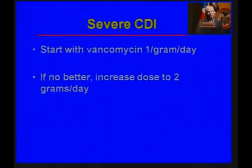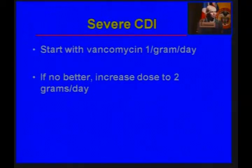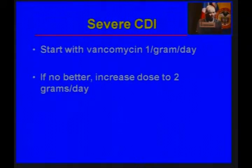In patients with severe disease, start with oral vancomycin at 250 milligrams four times a day. If they're not better, increase it to two grams a day. There's no evidence to support this, but I and many colleagues have seen patients with severe C. diff who don't get better on the lower dose, and then when we raise the dose, they get better. So if they're not better, increase the dose.